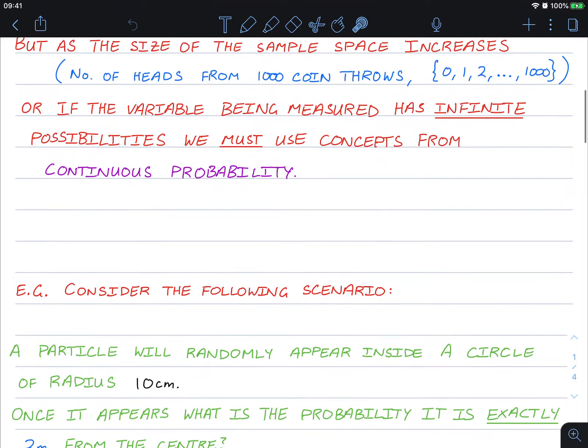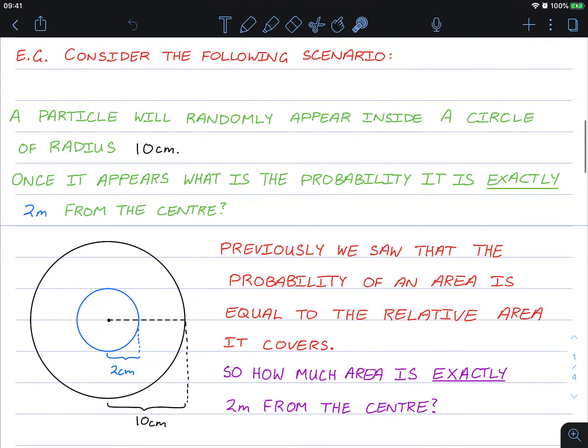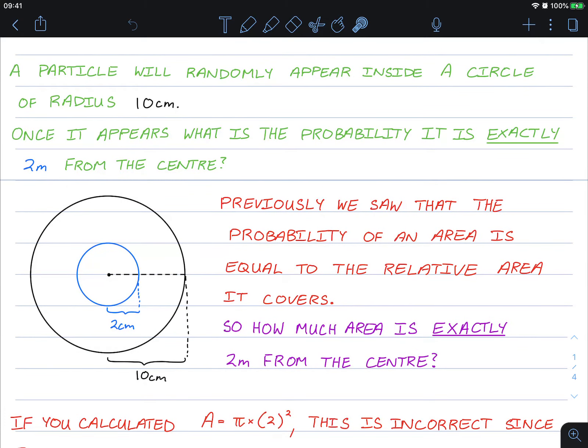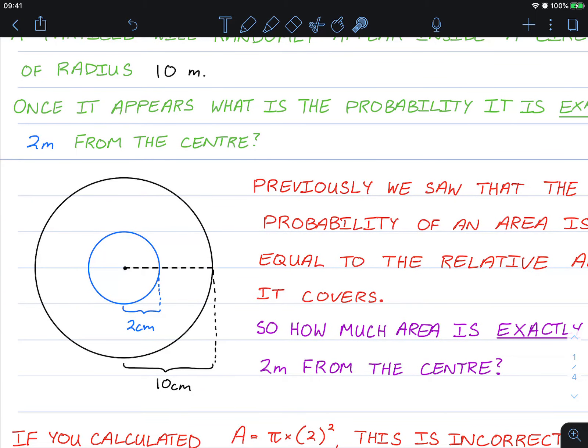I'll show an example of where this might be the case. Let's say a particle will randomly appear inside a circle of radius 10 meters. A dot's going to appear somewhere in this circle. Once it appears, what is the probability it is exactly two meters from the center? By that we mean what's the probability it's going to hit exactly on that edge.